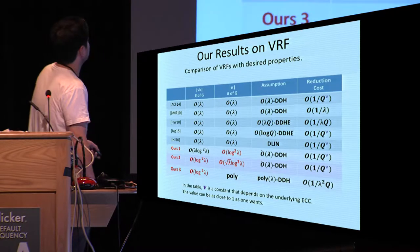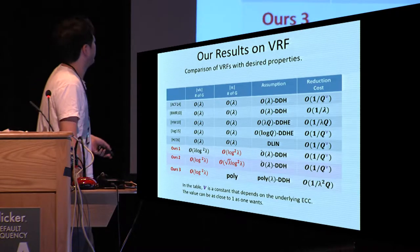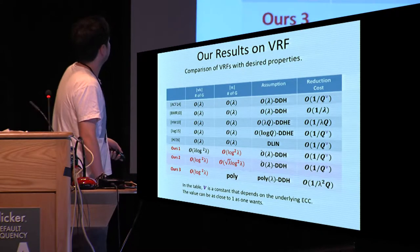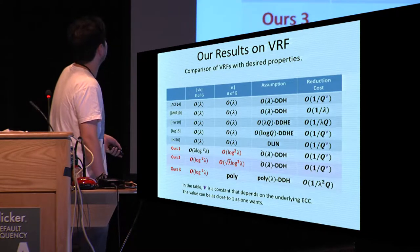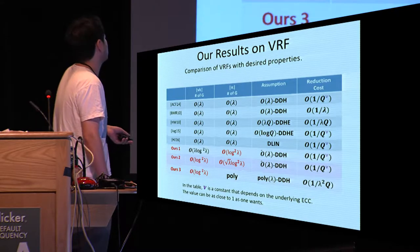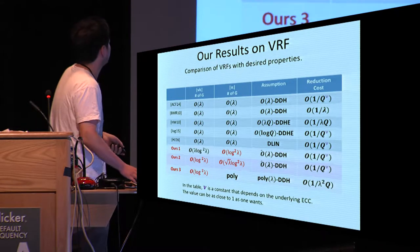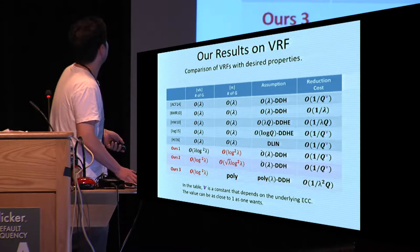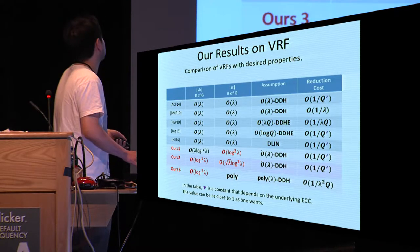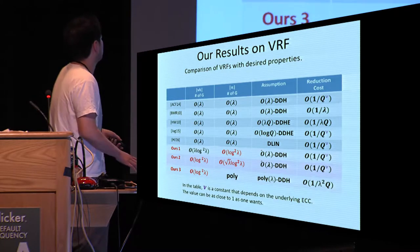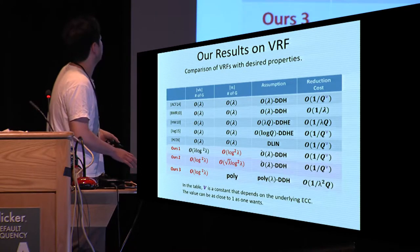These are our results on Verifiable Random Functions. We can achieve a scheme with the shortest proof size, or a scheme with the shortest verification keys, or both.